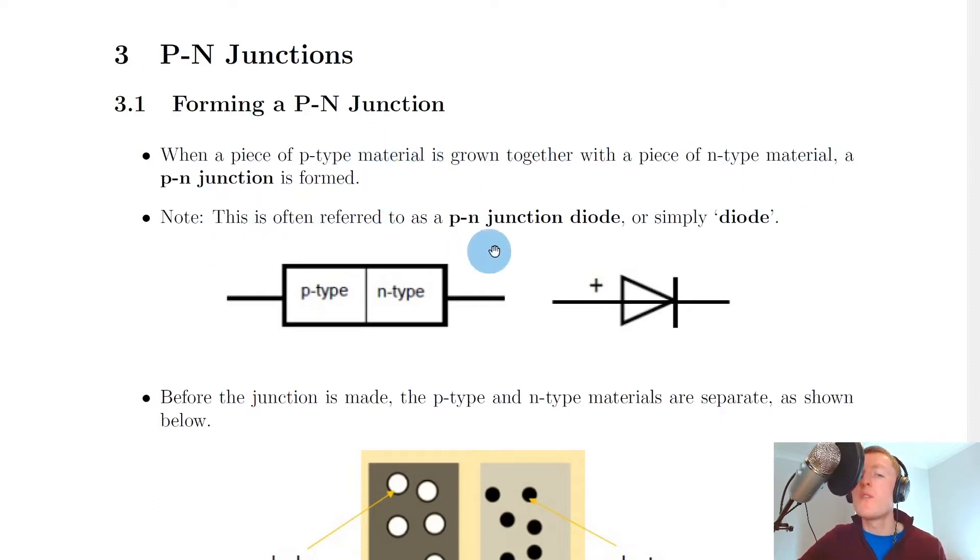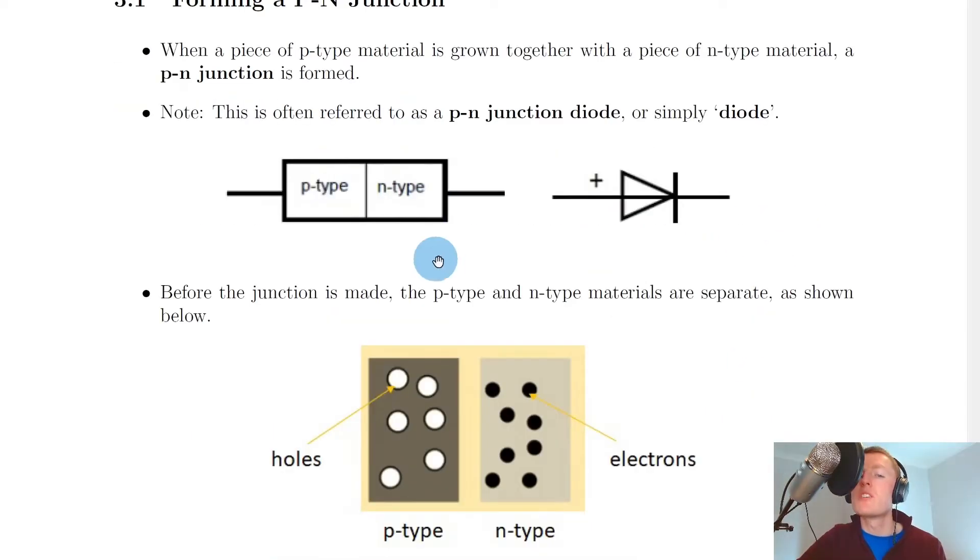This is often referred to as a P-N junction diode, or simply a diode for short. Here we've got a picture of a P-N junction diode with a P-type and N-type semiconductor material grown together. And here we've got a circuit symbol for a diode, which basically looks like an LED without the little arrows for the light. We've got this triangle shape with the thicker straight line here.